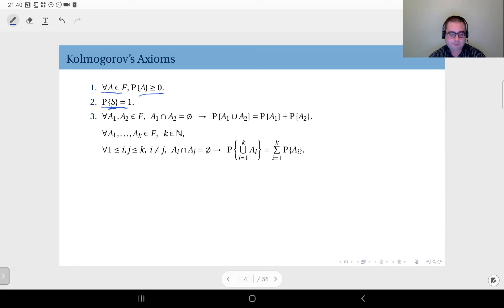Number three has two expressions: one is the special case, the other is the general case. Let's start with the special case. Say you have two events A1 and A2, and they are disjoint. Recall events are sets, so an event is essentially a set consisting of some outcomes. Consider two events A1 and A2 that are disjoint, so they do not have any common outcomes. This implies the probability of their union, which is another event, is equal to the sum of their individual probabilities.